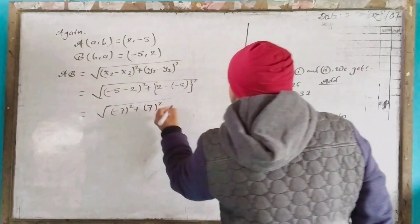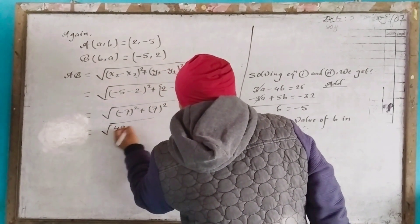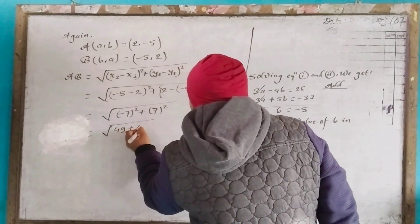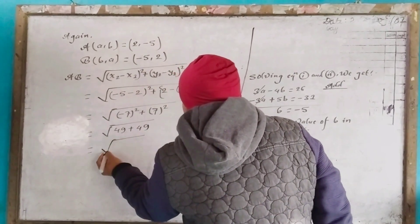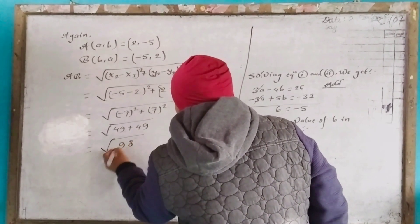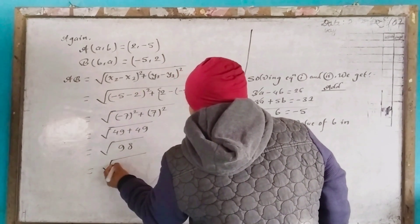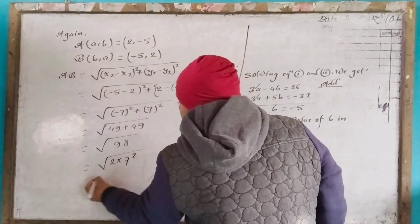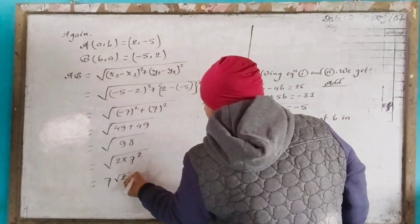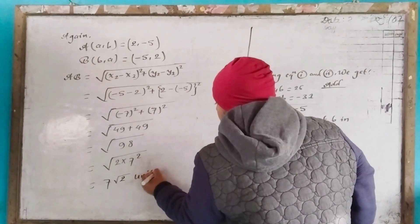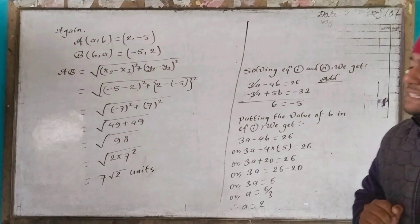That gives us 7 squared plus 7 squared, which is 49 plus 49, equaling 98. And square root of 98 equals 7 root 2. So the distance AB is 7 root 2 units.